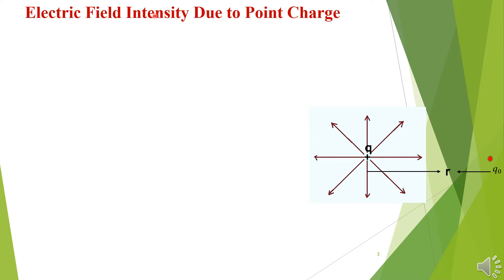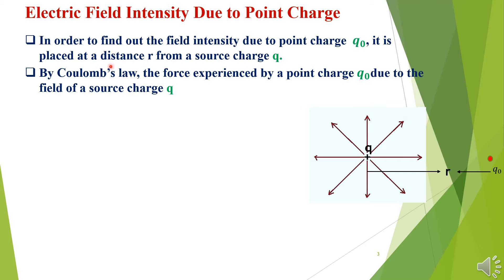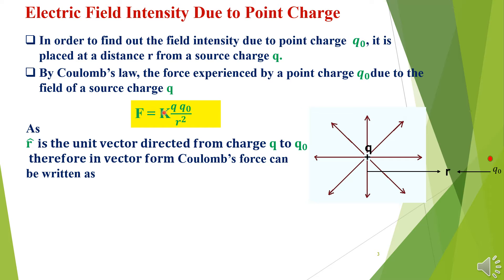Electric field intensity due to a point charge: we place a source charge Q and a test charge Q₀ at a distance R from the source charge Q. By Coulomb's law, the force experienced by Q₀ due to the field of source charge Q is F = K Q Q₀ / R², where K is Coulomb's constant, Q is the magnitude of the source charge, Q₀ is the magnitude of the test charge, and R is the distance between them.